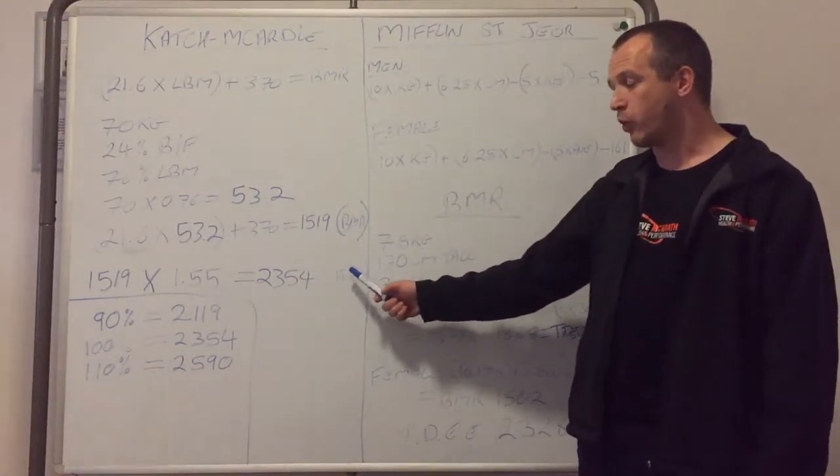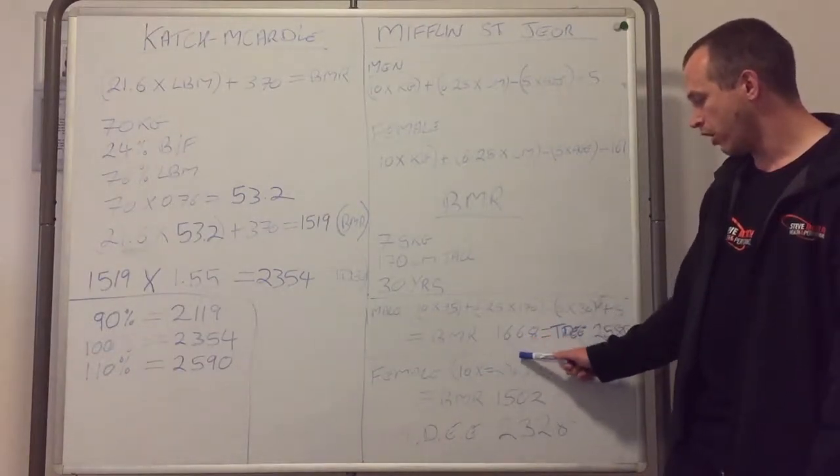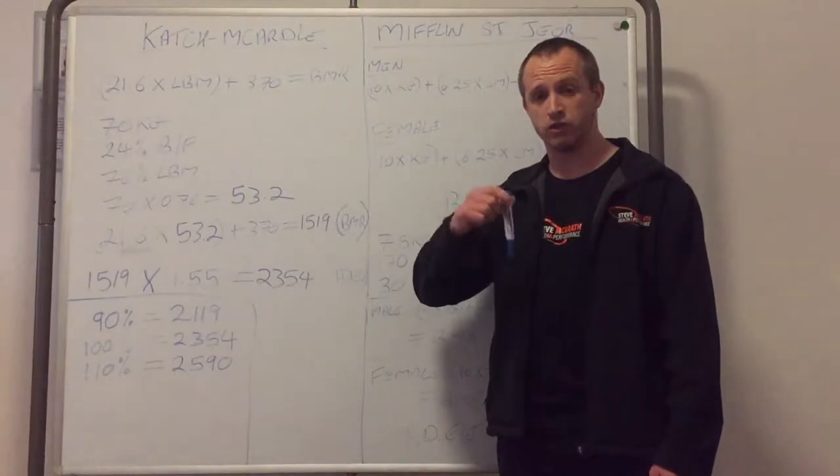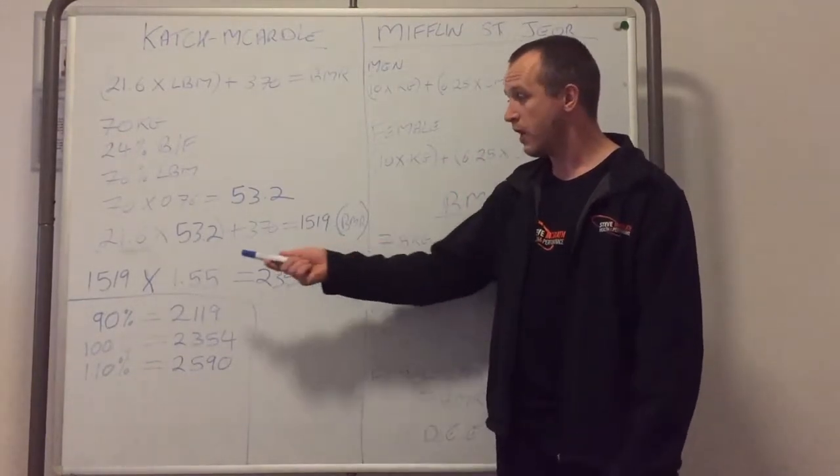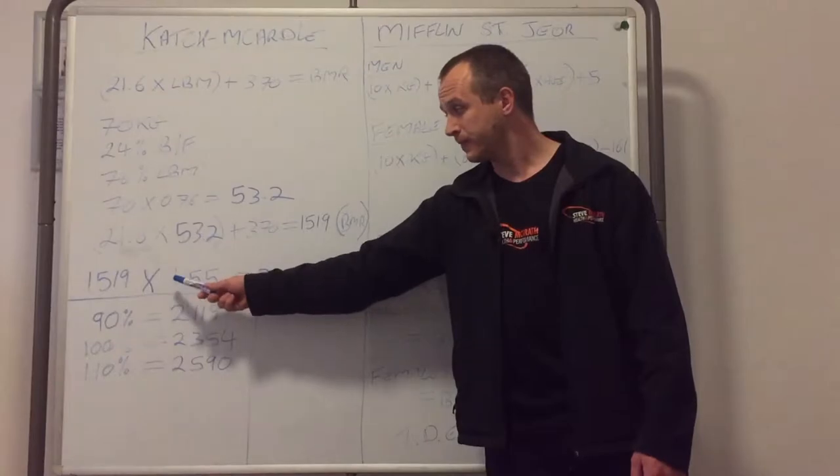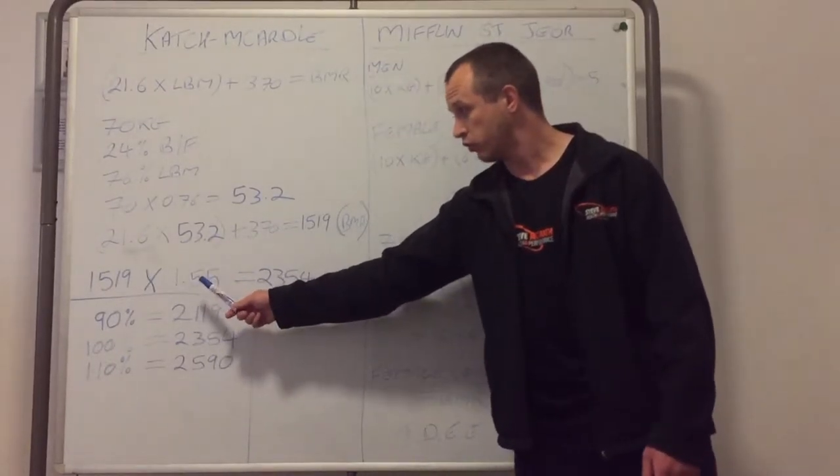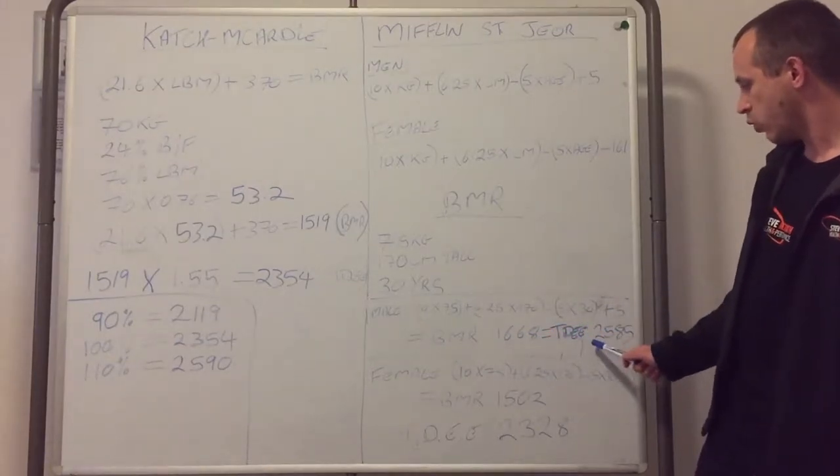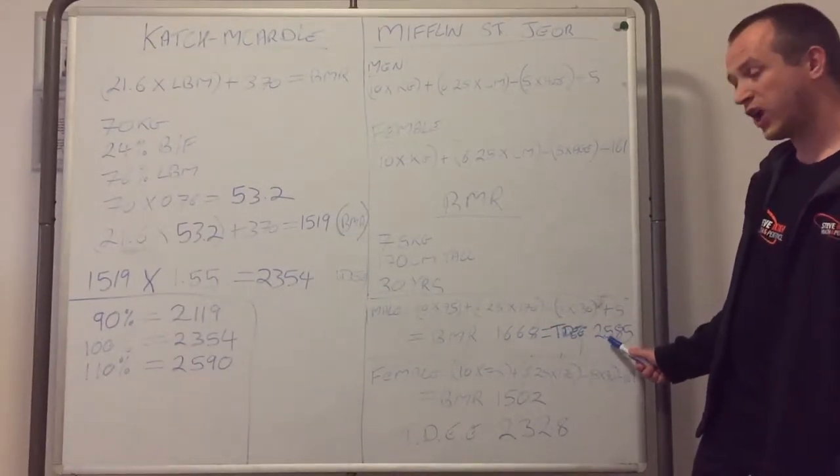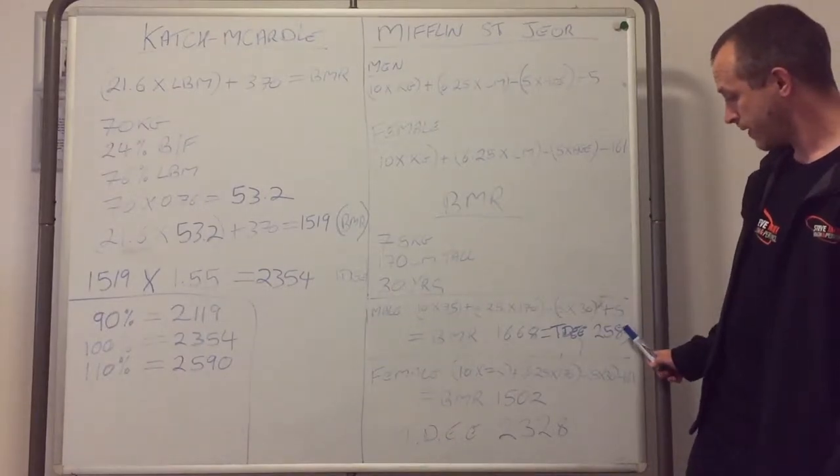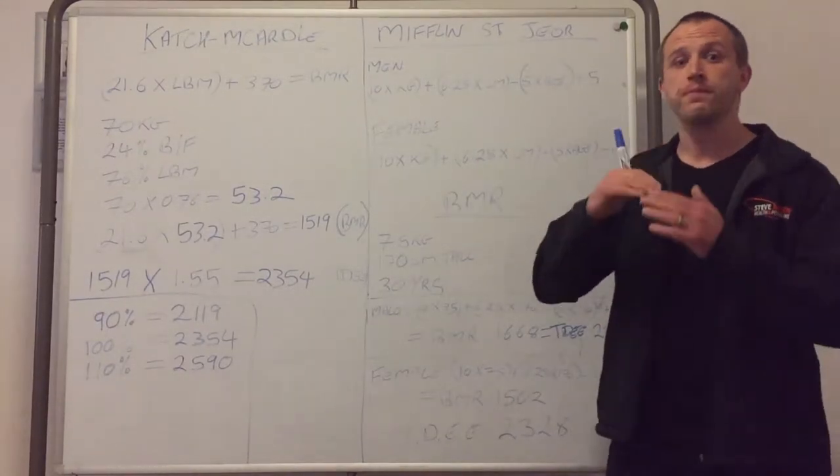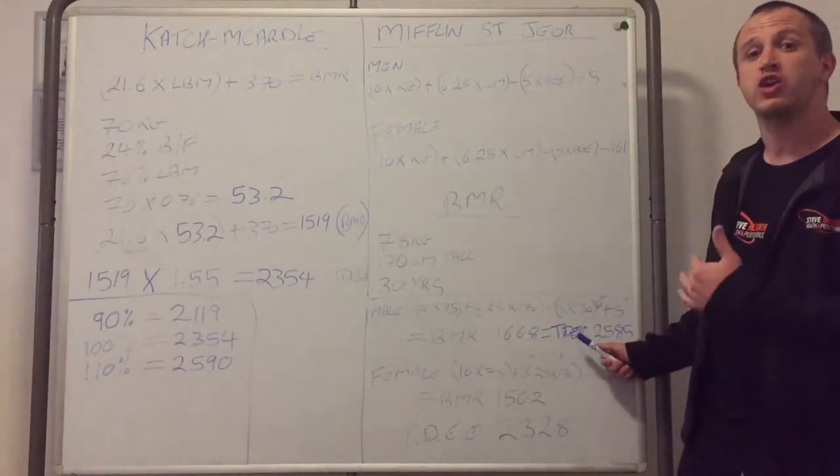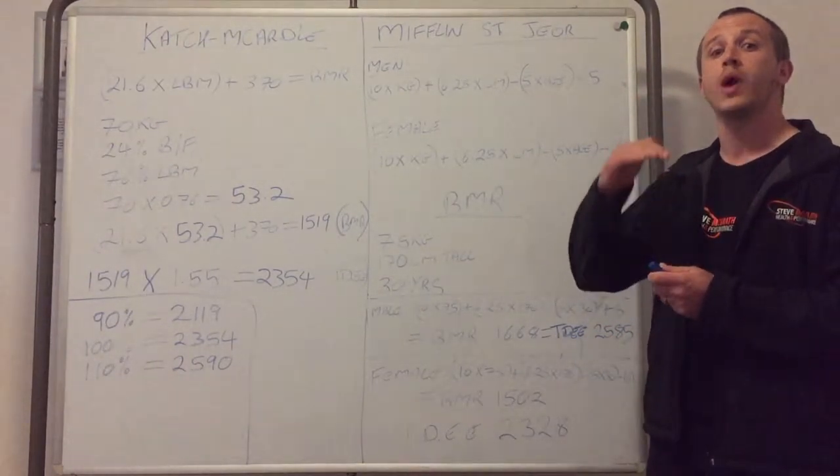And again, if you want to find out the maintenance, we multiply the BMR of each person by the activity factor. Again, I'll post the activity factors in the description below. But if we take someone who's training 4 days a week, this is the activity factor for that. So if we multiply 1.55 by 1668, we would get maintenance calories for this man at 2585. And then we would either decrease those calories by 10 to 20% to lose weight, or increase them by 10 to 20% to add weight.